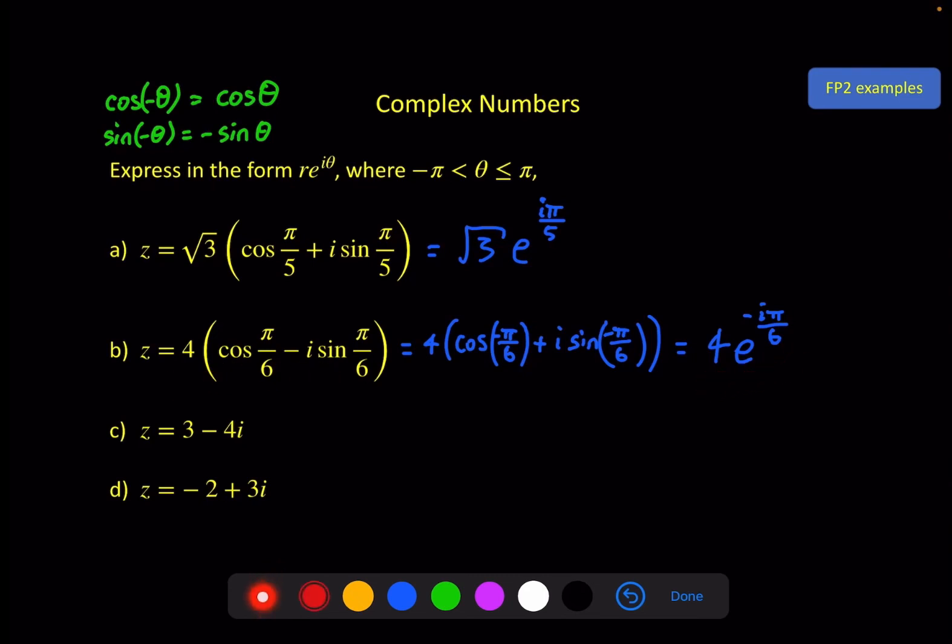So let's quickly sketch out an Argand diagram. We've got 3 minus 4i is down here somewhere. The modulus of that, 3 squared plus 4 squared square rooted is a 5 and the argument is here.